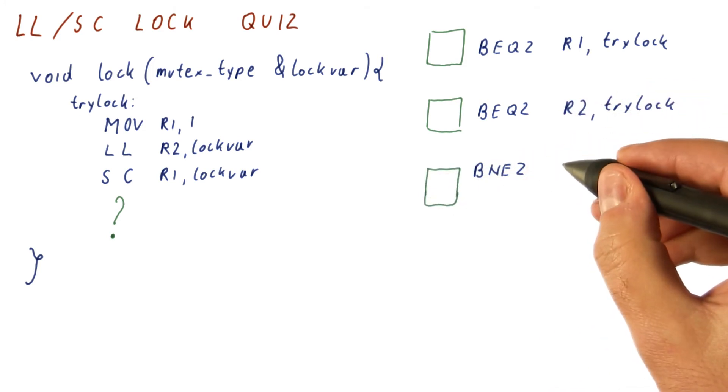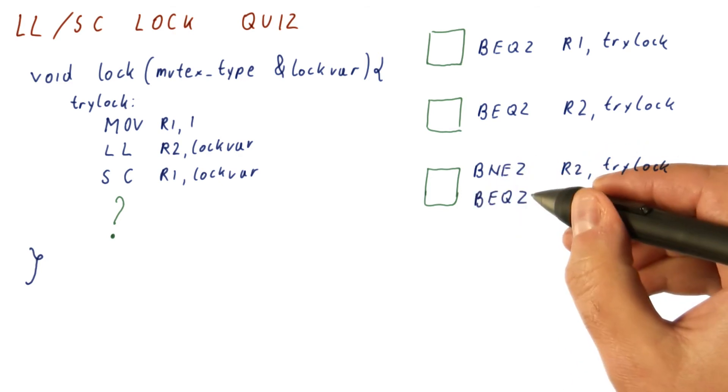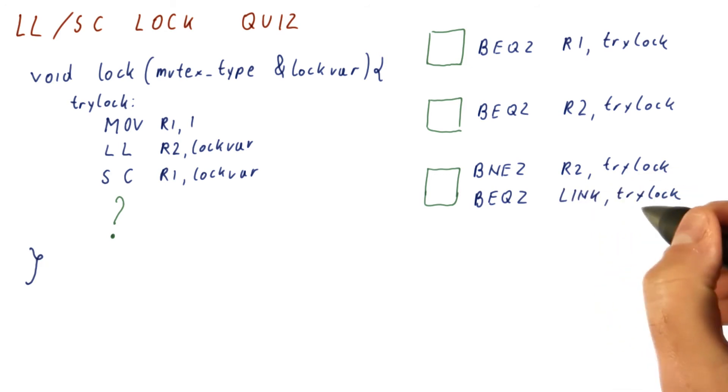The third choice is to do branch on not equals 0 R2 trylock, and then branch on equals 0 link trylock.